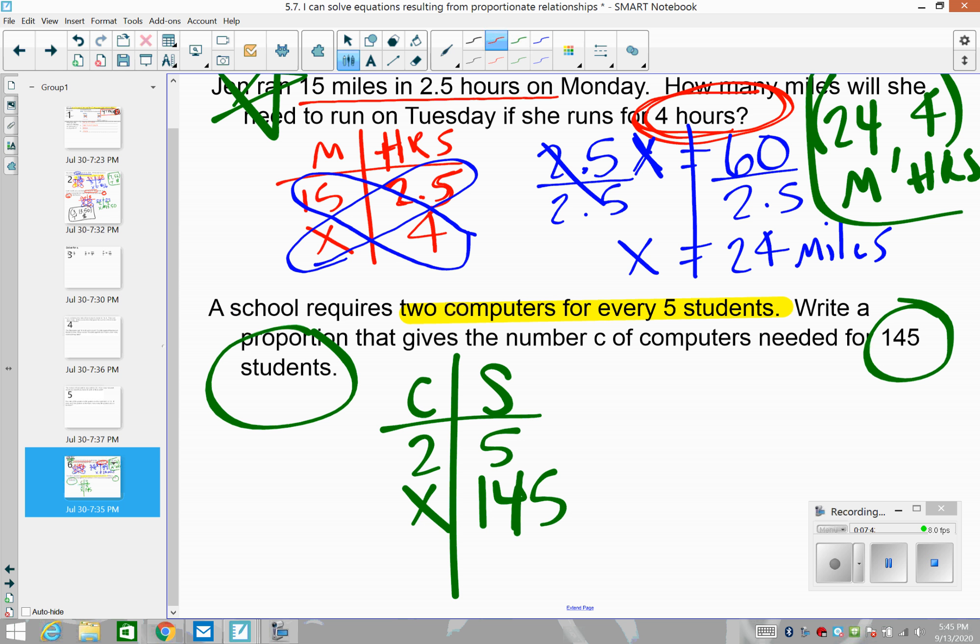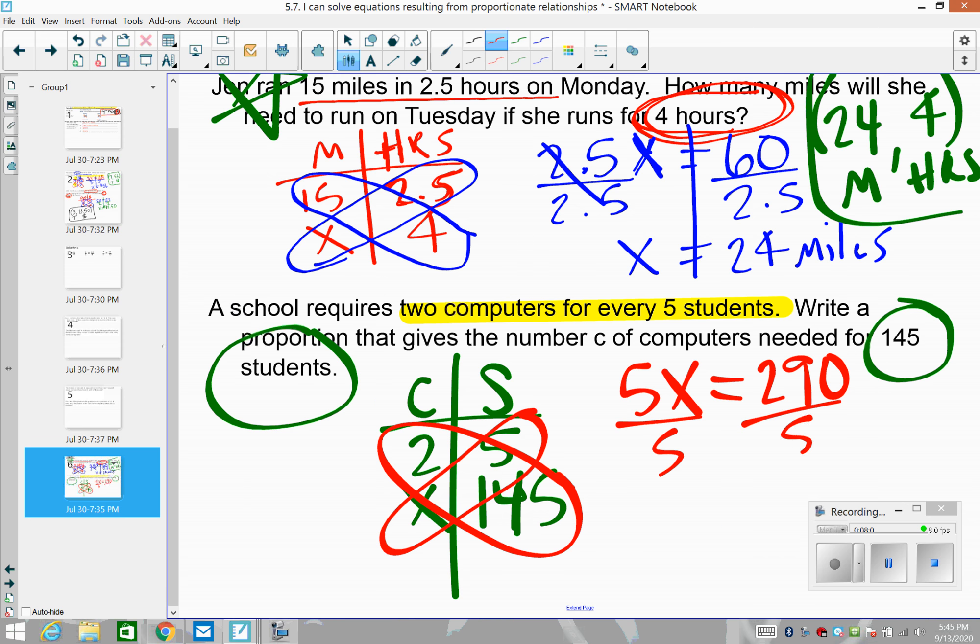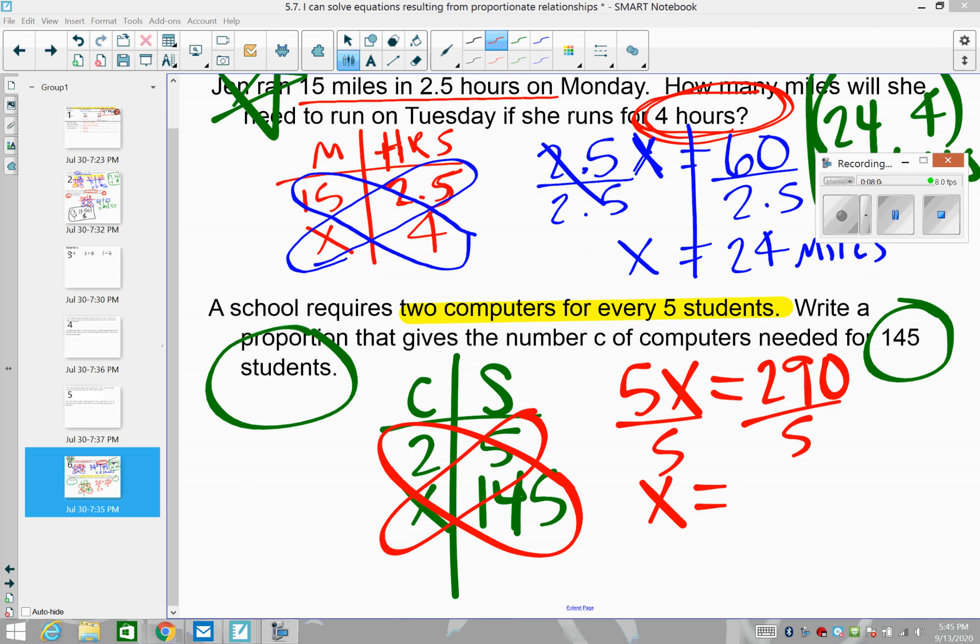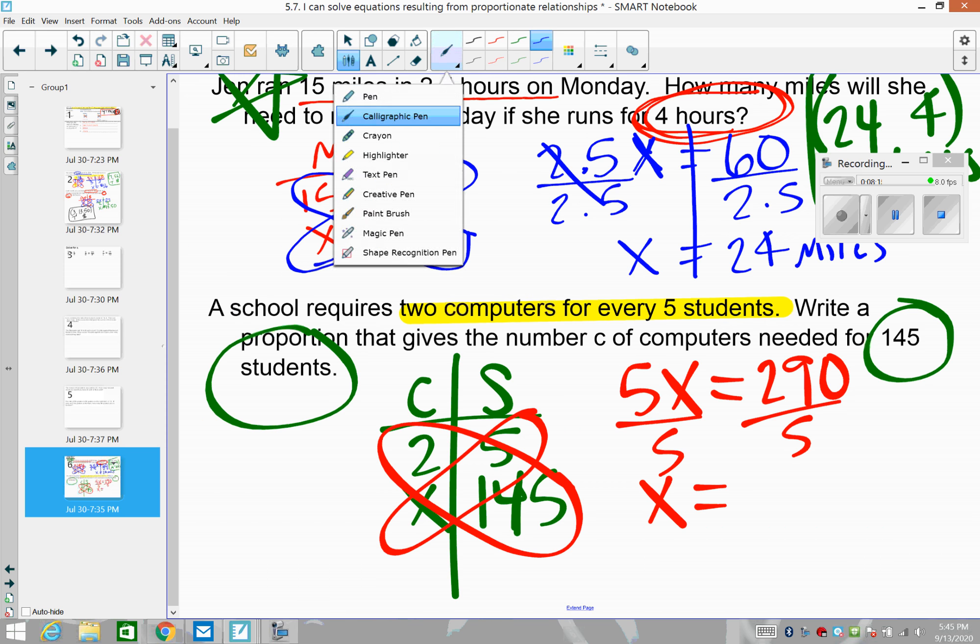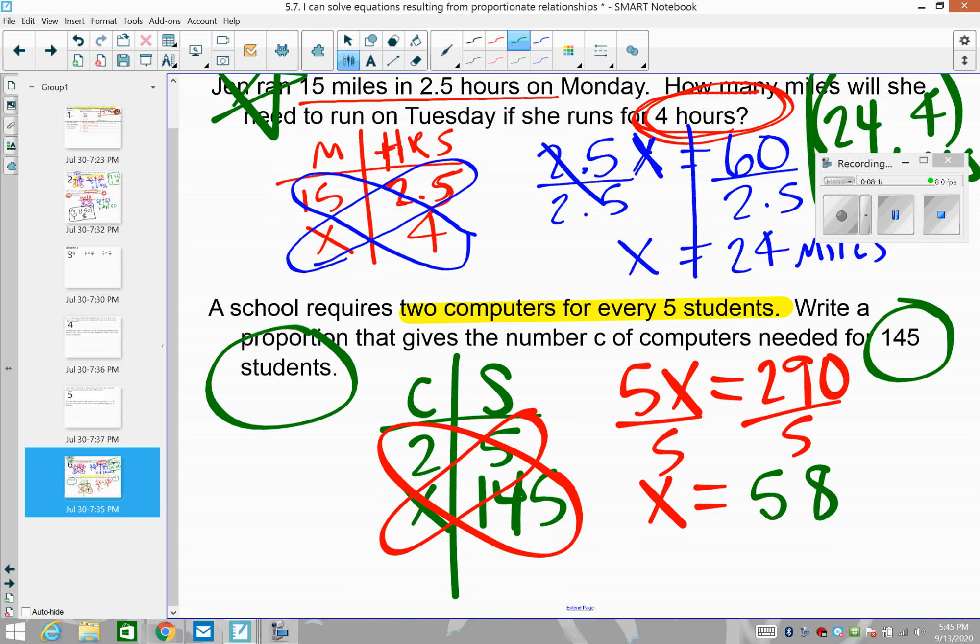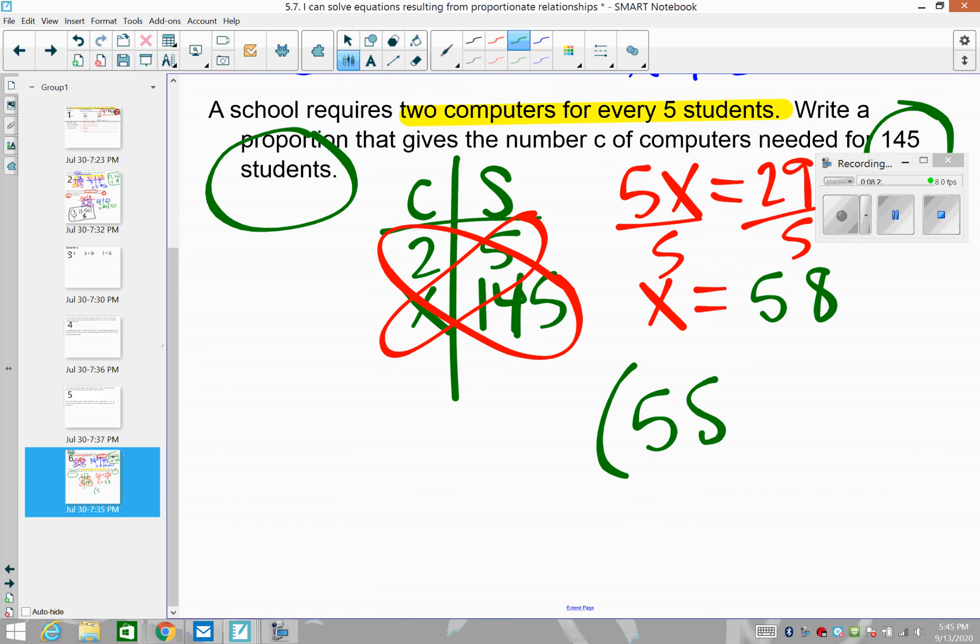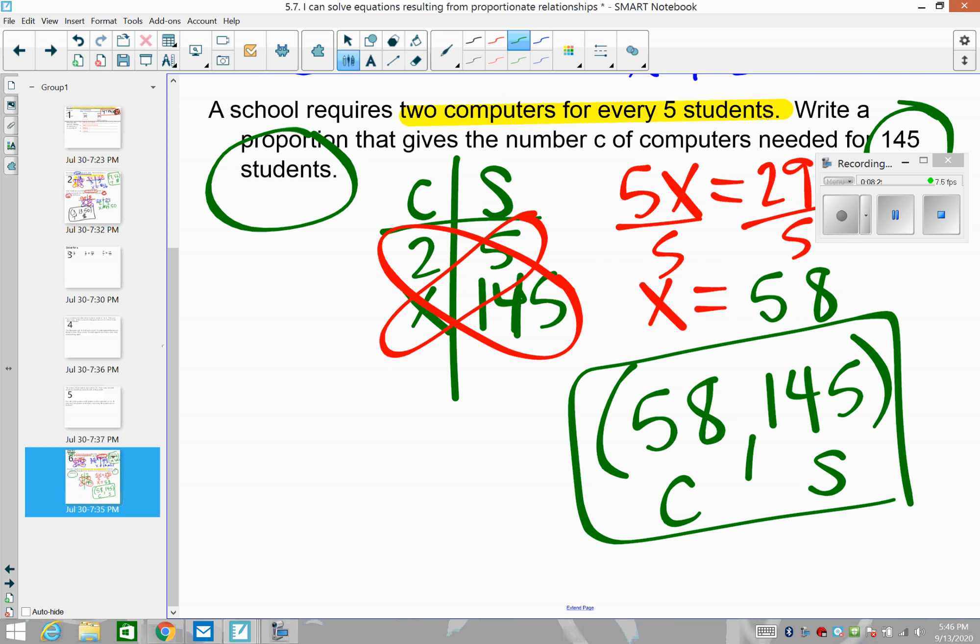Write a proportion that gives the number of computers needed for 145 students. So we take cross products then. We're going to start with the X. We're going to multiply and we're going to multiply the other side. So we have two times 145. Some of you can do that in your head, maybe, maybe not, is 290. Build house, build fence, clean yard, clean yard. We end up getting X is equal to 290 divided by five is, type it in, type it in, is 58. So we're saying 58 computers, 145 students. So we have 58 computers for 145 students, cross products.